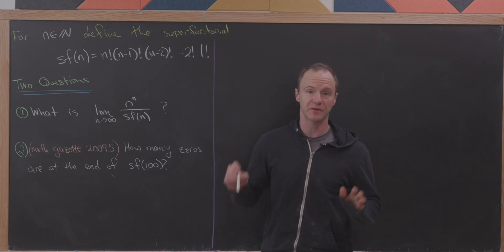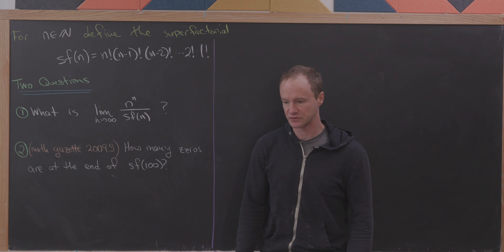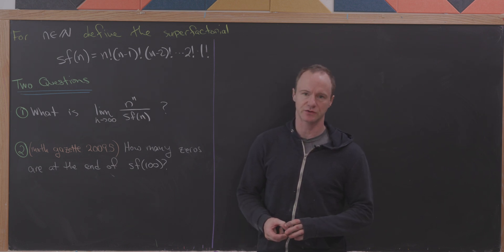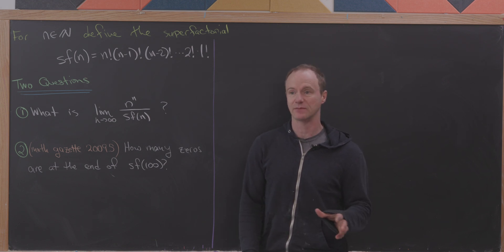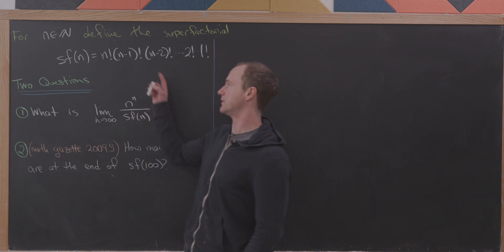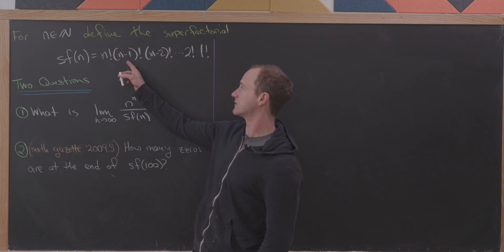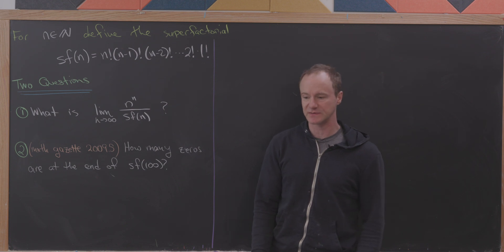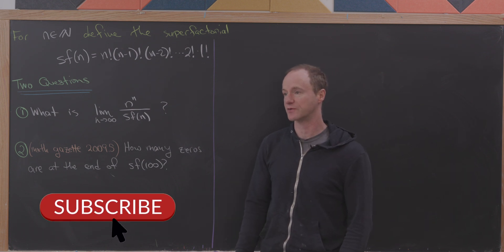Today I want to look at the notion of the superfactorial and do two nice problems involving it. There are several different notions of this object; we're going to deal with one. The superfactorial we will use, denoted sf(n), is n factorial times (n−1) factorial times (n−2) factorial, all the way down to 2 factorial times 1 factorial.